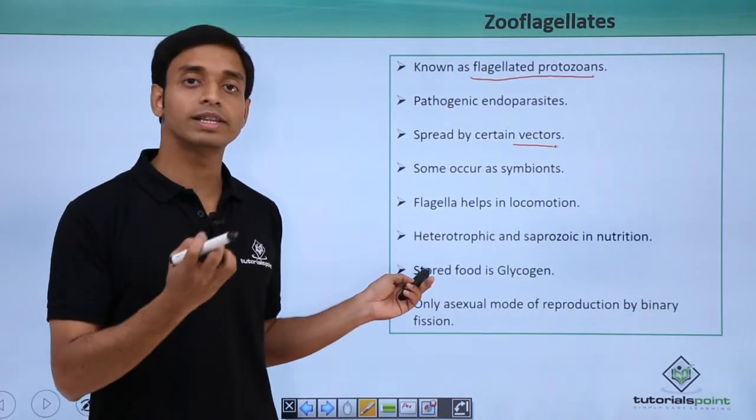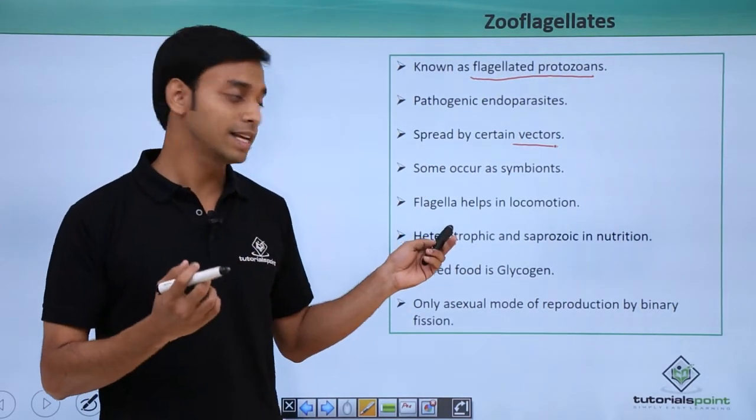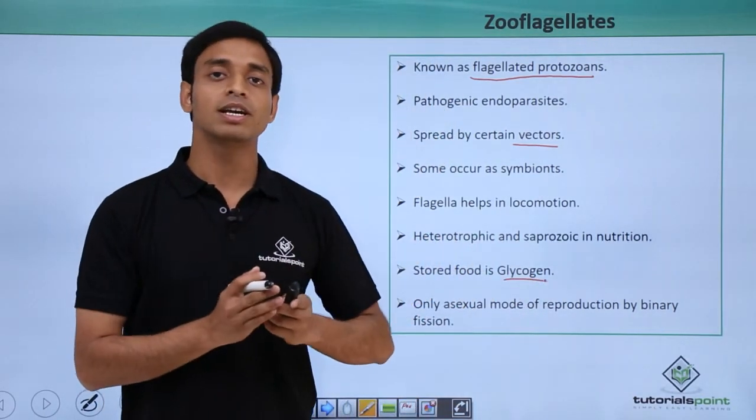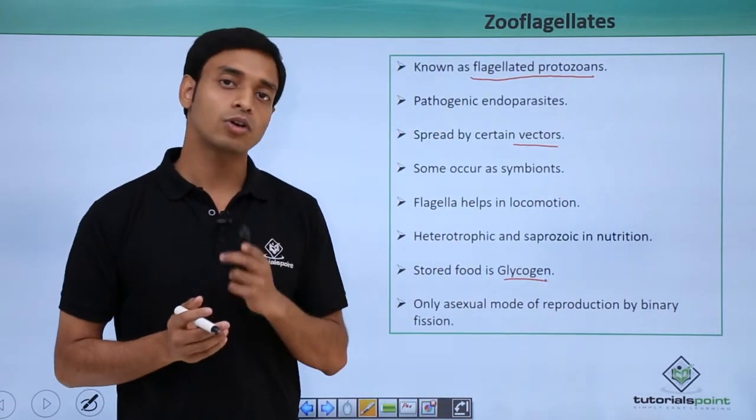The stored food in these type of zooflagellated cells is mostly glycogen. Glycogen is the storage material as food for these type of organisms.